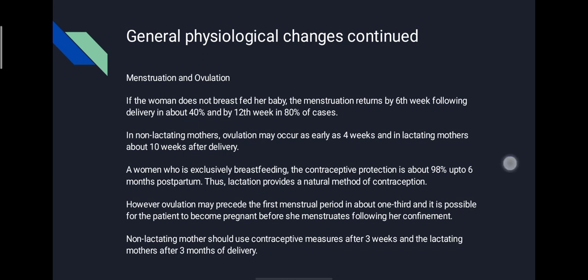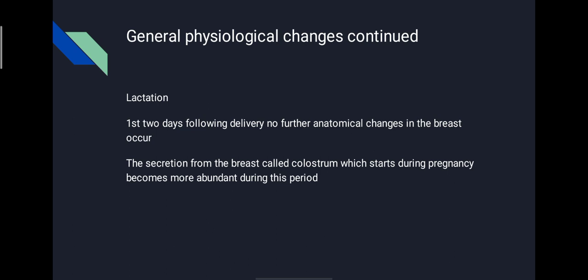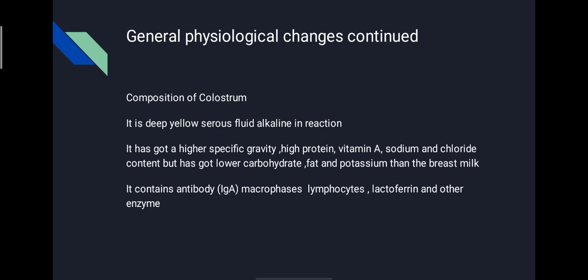Regarding lactation: for the first two days following delivery, no further anatomical changes in the breast occur. The secretion from the breast called colostrum, which starts during pregnancy, becomes more abundant during this period. Composition of colostrum: it is a deep yellow serous fluid with an alkaline reaction. It has higher specific gravity, high protein, vitamin A, sodium, and chloride content, but lower carbohydrate, fat, and potassium than breast milk. It contains antibodies IgA, macrophages, lymphocytes, lactoferrin, and other enzymes.